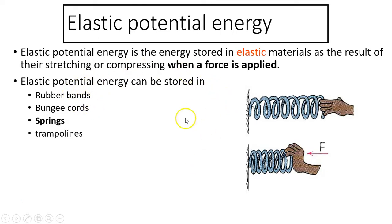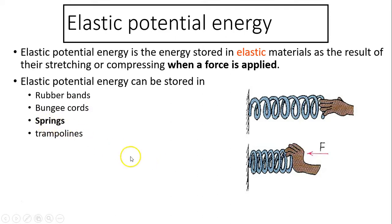Elastic potential energy is the energy stored in elastic material as a result of their stretching or compressing when a force is applied. Elastic potential energy can be stored in rubber bands, bungee cords, springs, or trampolines. But in most cases in physics, we are concerned with elastic potential energy stored in springs — ideal springs that obey Hooke's Law.